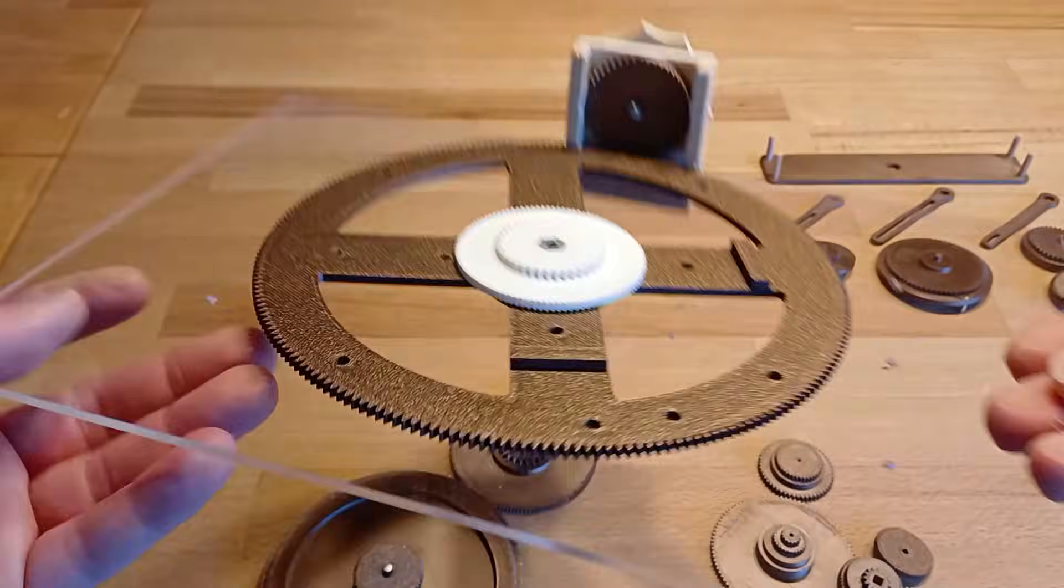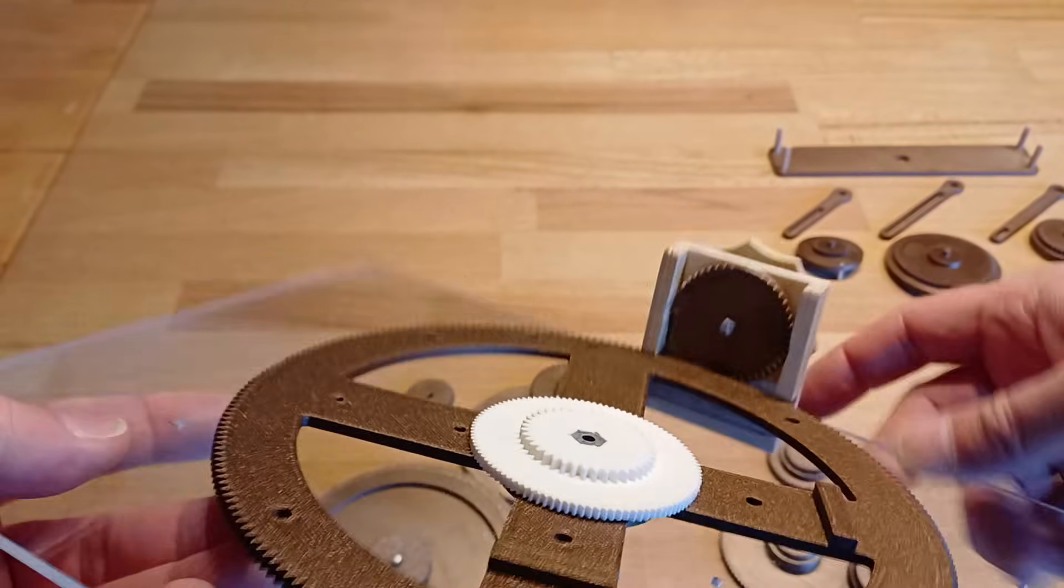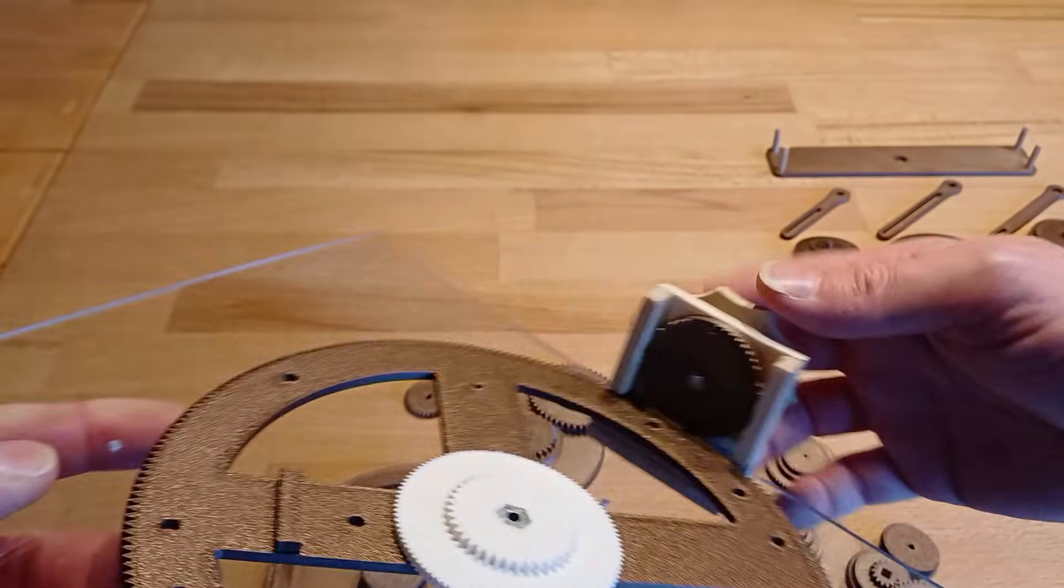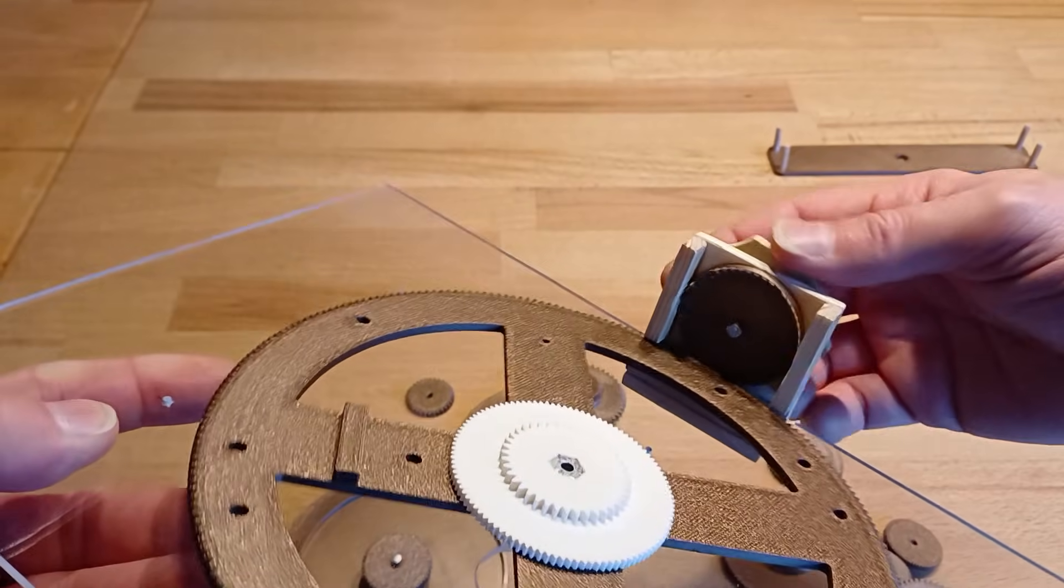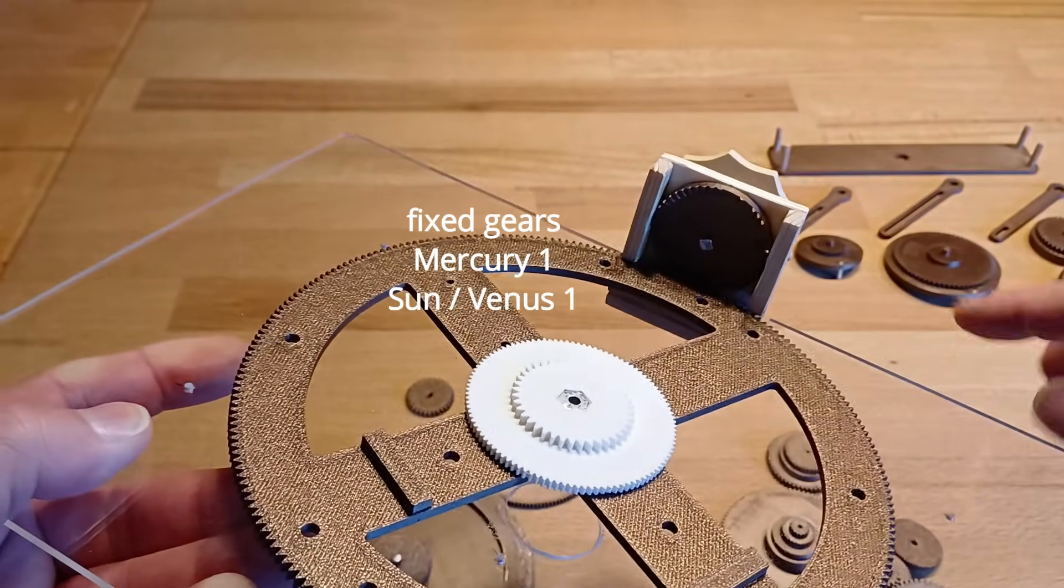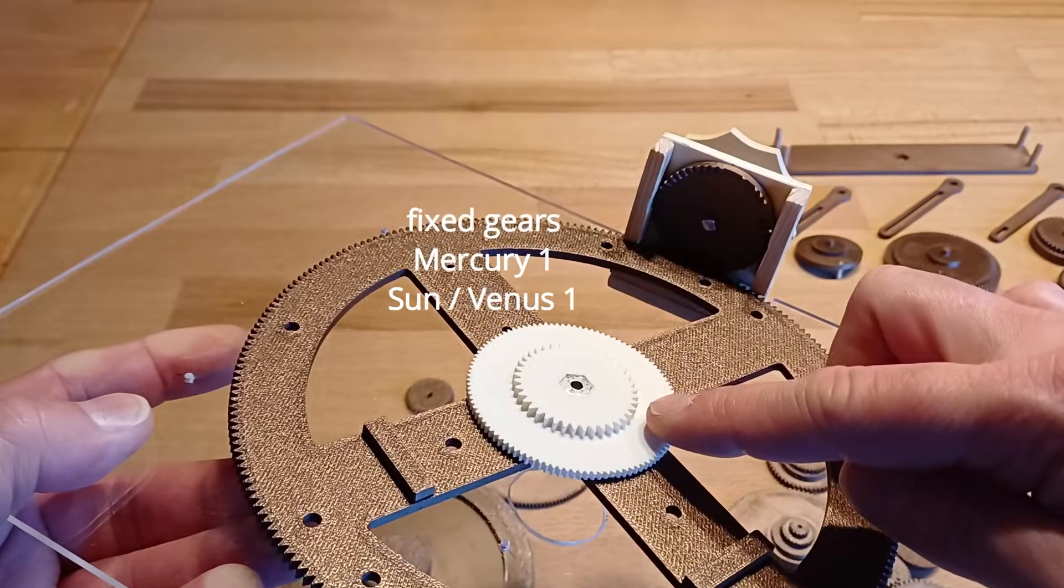I now show you the base plate with the main wheel B1. It is driven by the ground wheel A1 forward into the future and backward into the past. Two fixed gears for the epicyclic movements of the sun, Mercury and Venus are mounted on the main wheel.